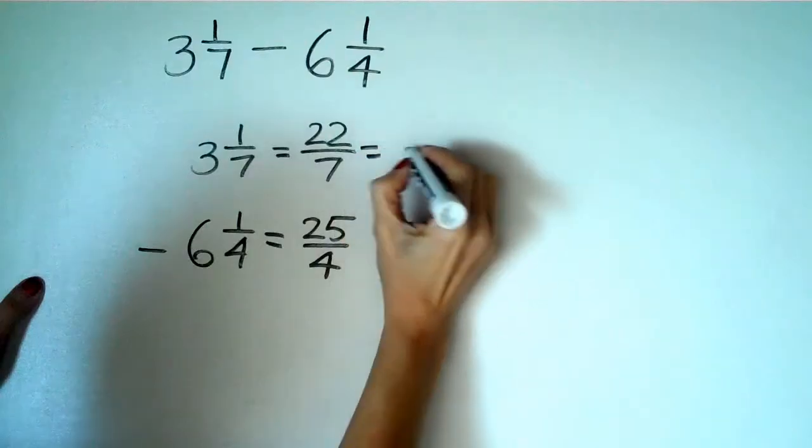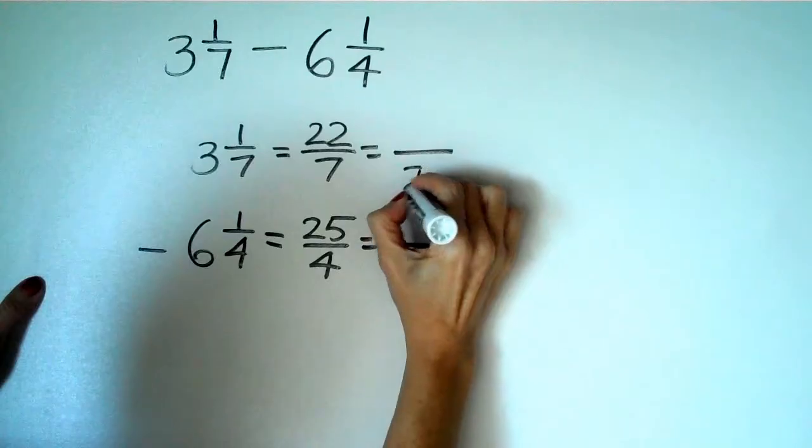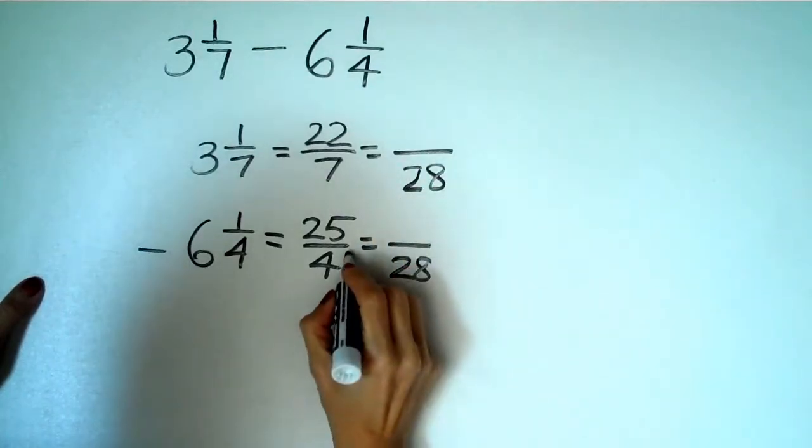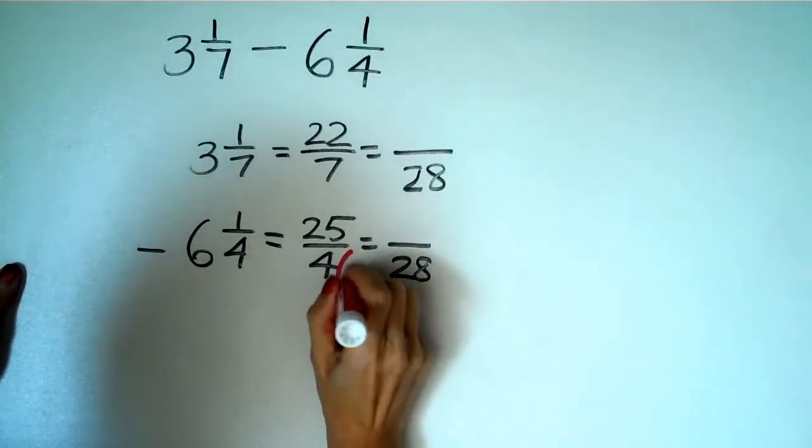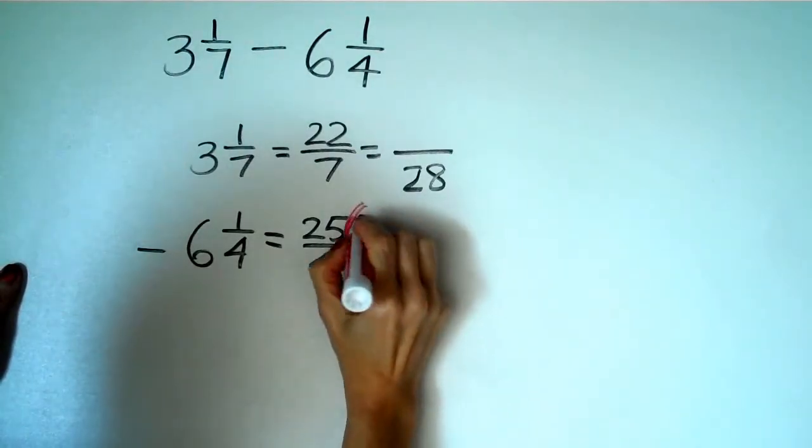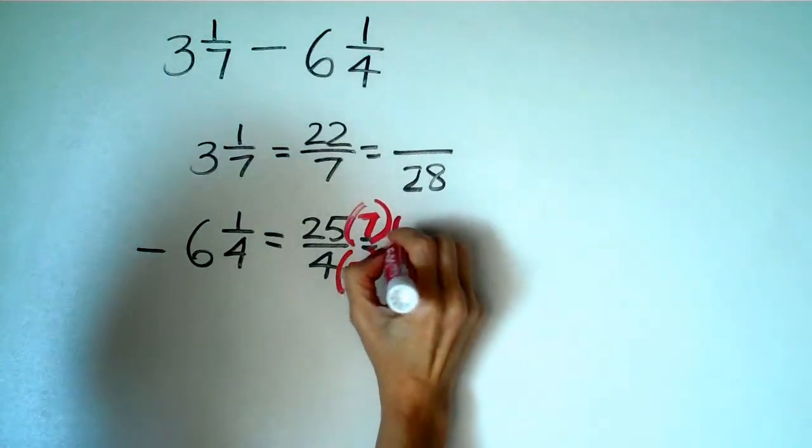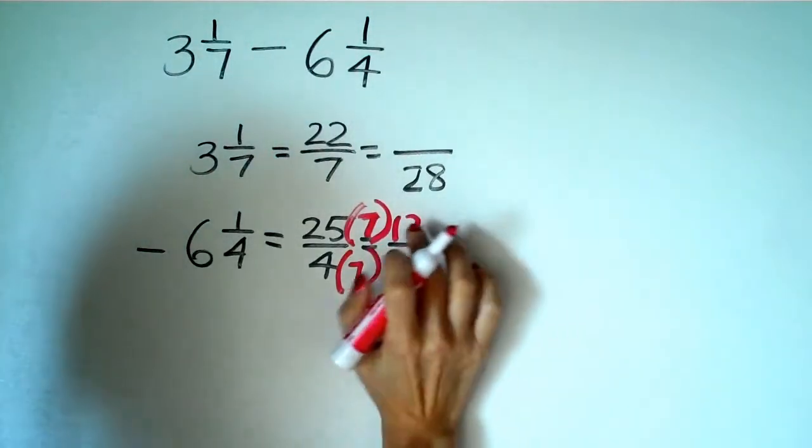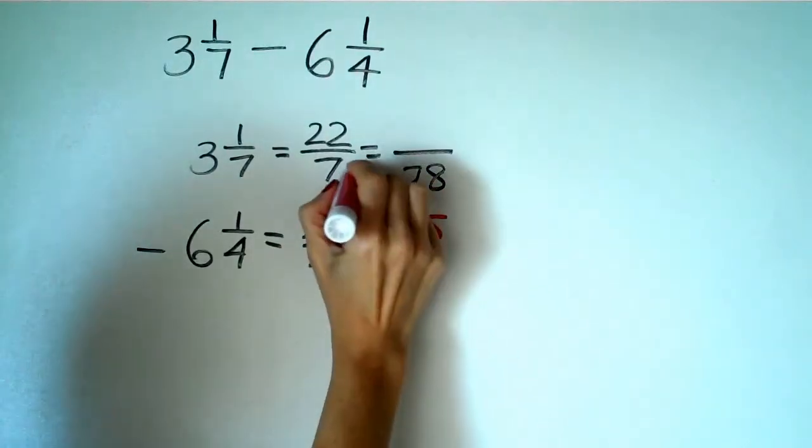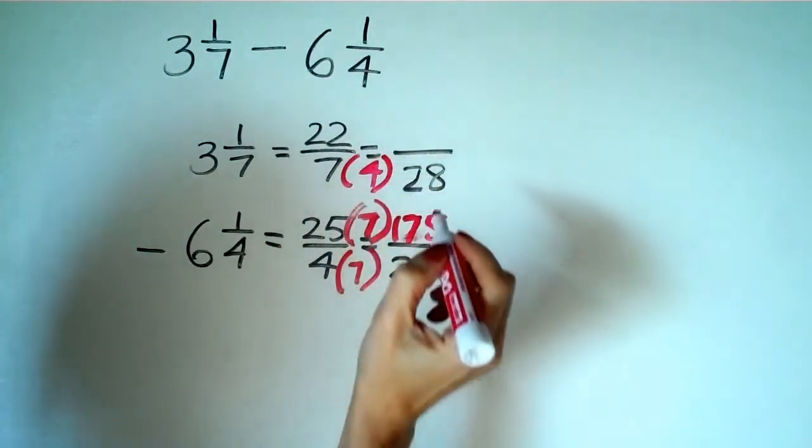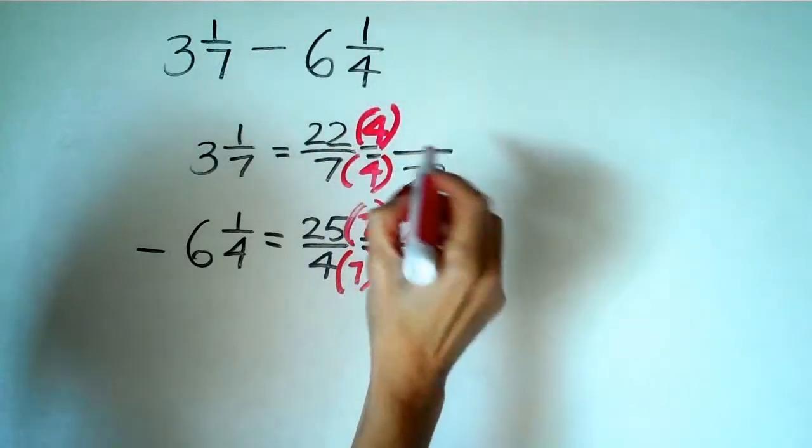The common denominator here would be twenty-eight, because four times seven is twenty-eight. And twenty-five times seven is actually one hundred seventy-five. Seven times four is twenty-eight. And twenty-two times four is eighty-eight.